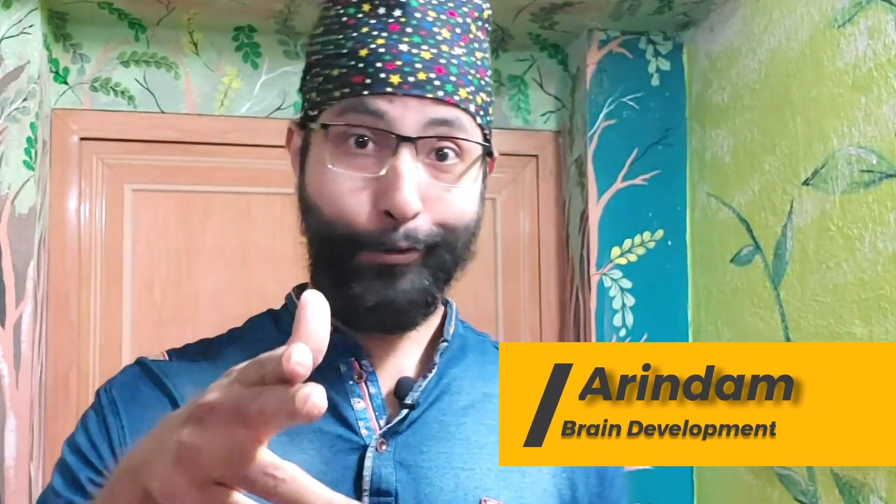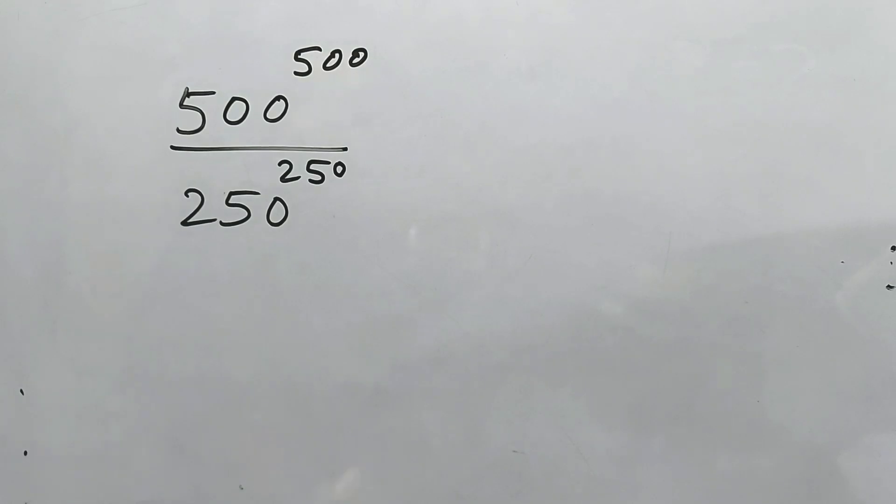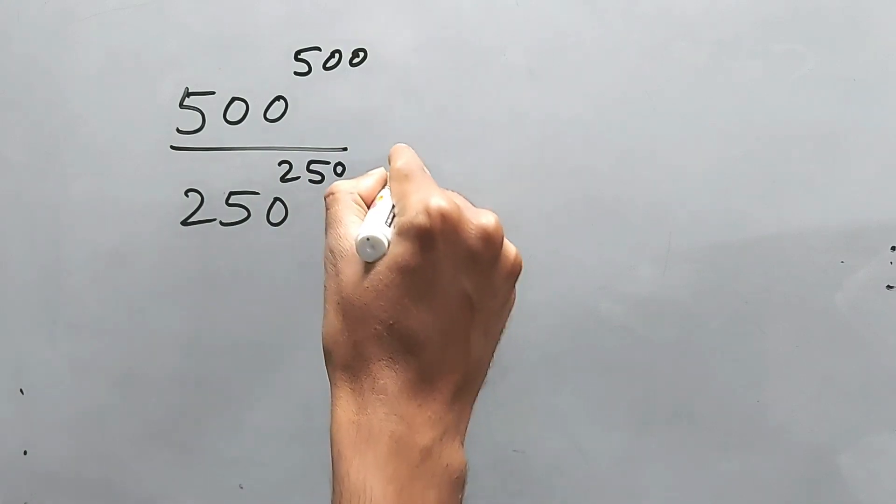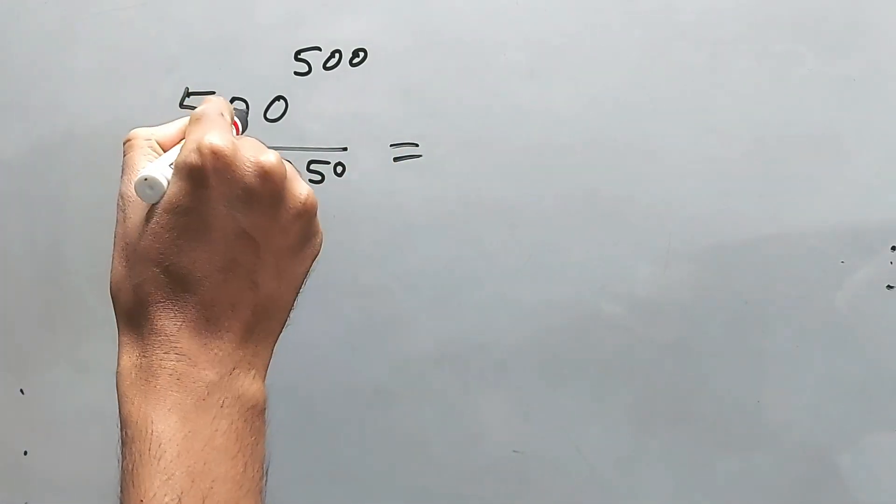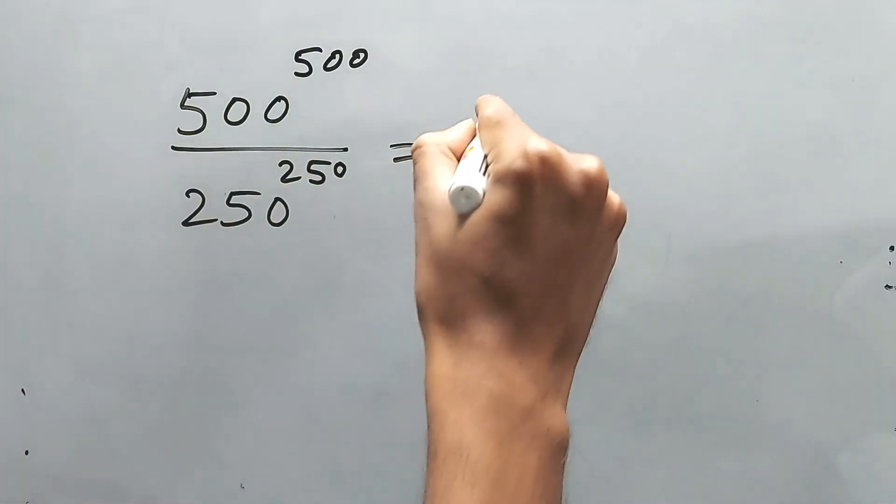Hi guys, this is Aridham. You're watching Brain Development. Let us simplify 500 to the power 500 divided by 250 to the power 250. Let's try this one. First of all, 500 is 50 times 10, right?